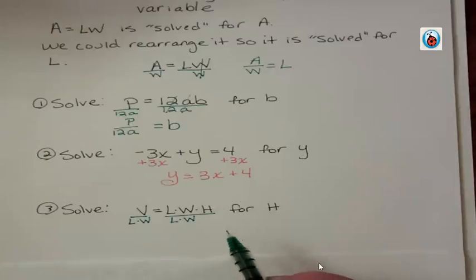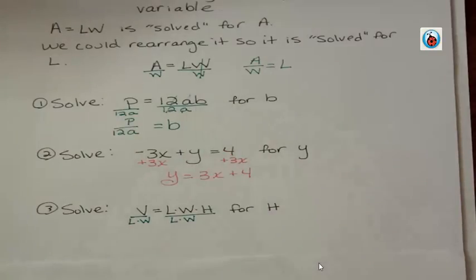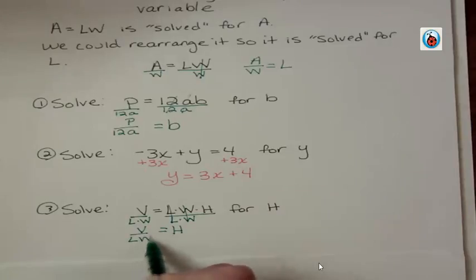We don't really need those dots in between. LWH would mean the same thing, just like we had LW here, AB here. Sometimes you see them and sometimes you don't. The L's and the W's cancel. And you get V over LW. That's rearranging that, solving that for H.